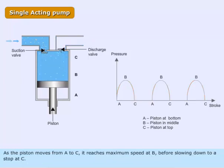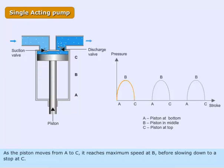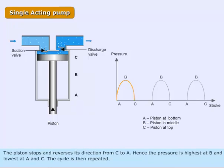As the piston moves from A to C, it reaches maximum speed at B before slowing down to a stop at C. The piston stops and reverses its direction from C to A. The pressure is highest at B and lowest at A and C. The cycle is then repeated.